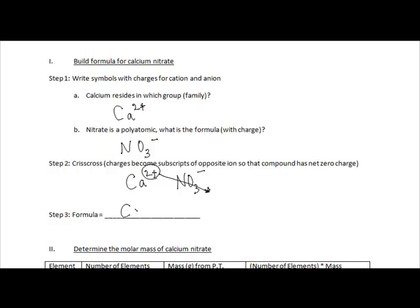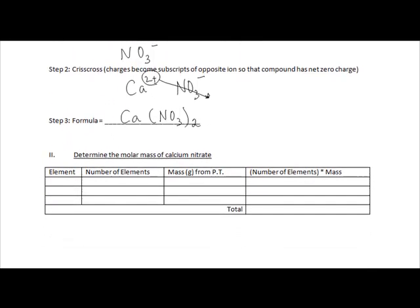So our formula ends up being Ca, and then in parentheses we put the polyatomic, the nitrate, and then we have a subscript of 2. This means that we have 2 of the nitrates. Now that we have our formula for calcium nitrate, we can quickly calculate the molar mass by completing this chart.